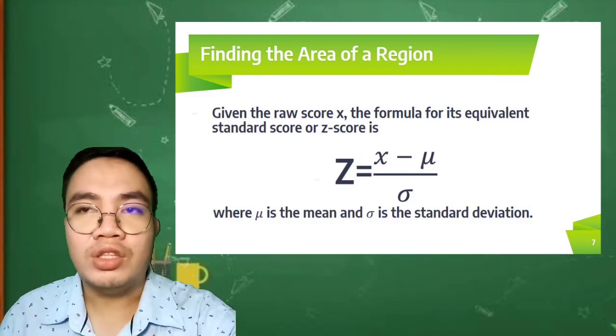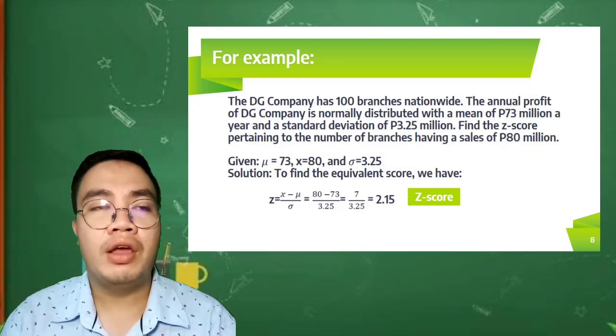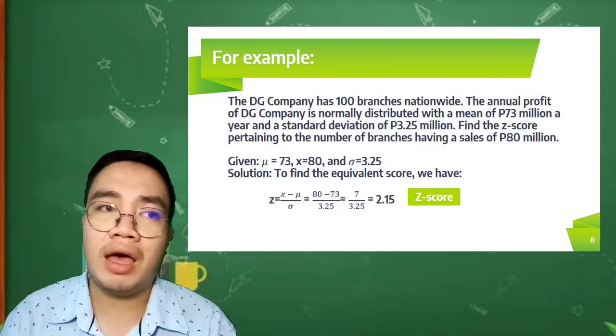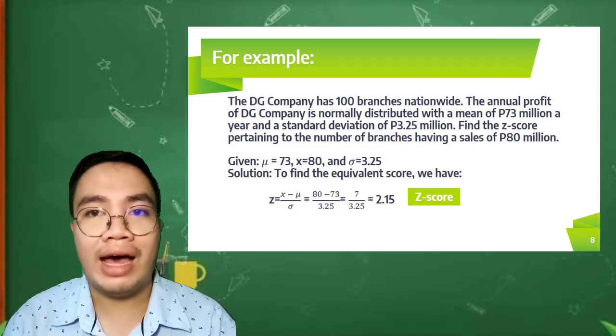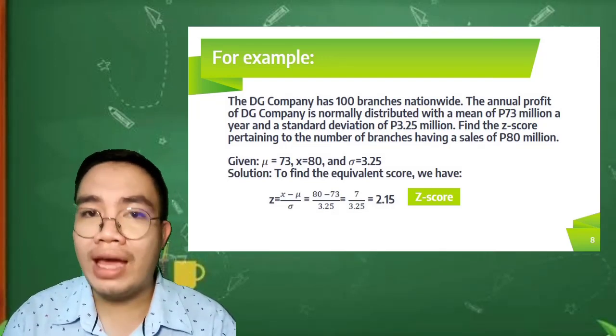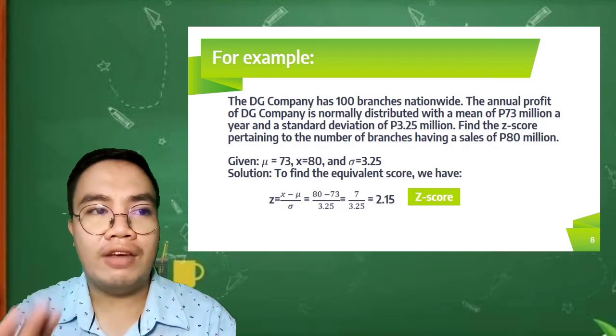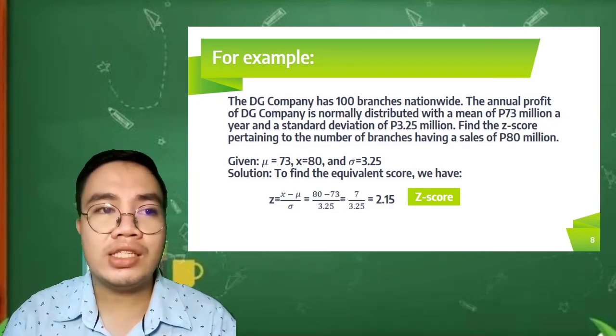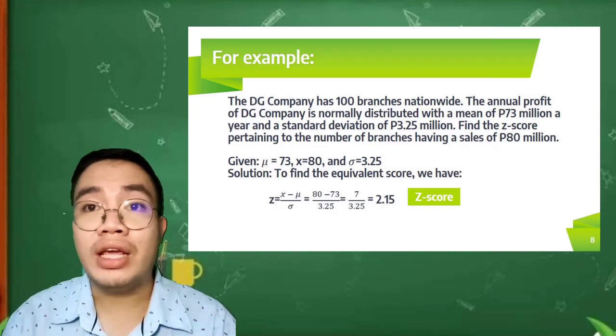For example, we have here a word problem. The DG Company has 100 branches nationwide, and the annual profit of the DG company is normally distributed with a mean of 73 million a year and a standard deviation of 3.25 million. Find the Z-score pertaining to the number of branches having a sales of 80 million. Based on the problem, our mean is 73 million, our X is 80, and our standard deviation is 3.25.